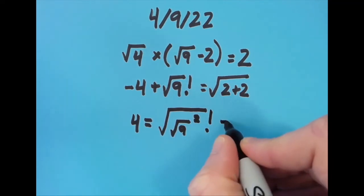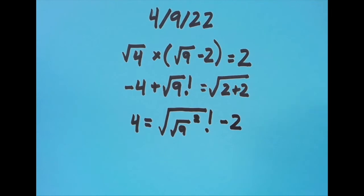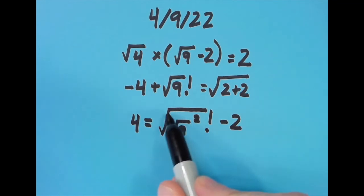√9 is 3, 3 squared is 9, the square root of this 9 is 3, 3 factorial is 6, and 6 - 2 equals 4. I just had some fun with that one.